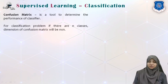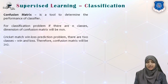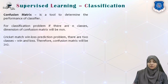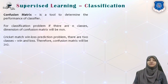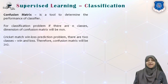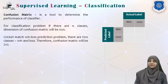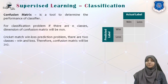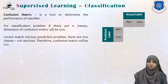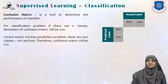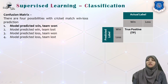We will create something called a confusion matrix. A confusion matrix is a tool that determines the performance of a classifier or classification algorithm. For a classification with n classes, the confusion matrix size will be n×n. For binary classification, the confusion matrix will be 2×2. It has an actual label axis and a predicted label axis. The number of outcomes where the predicted label is 'win' and the team actually wins is called true positive.